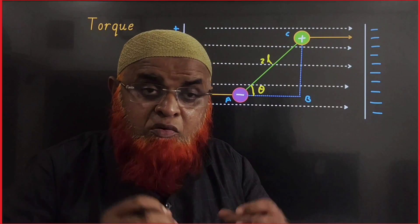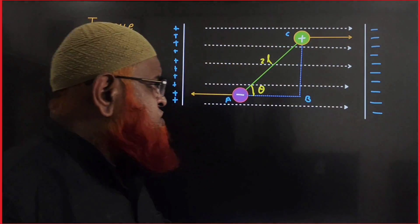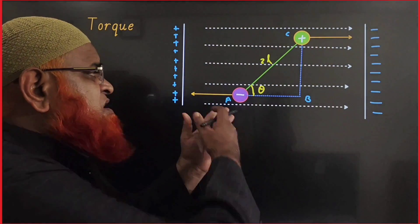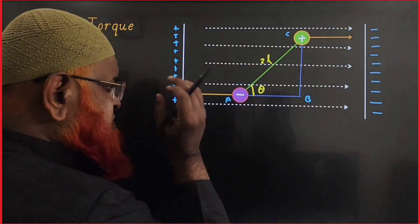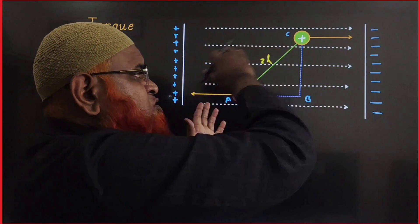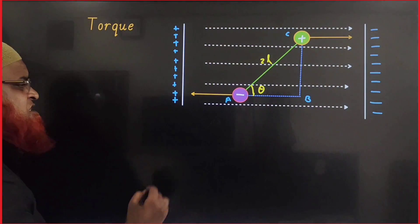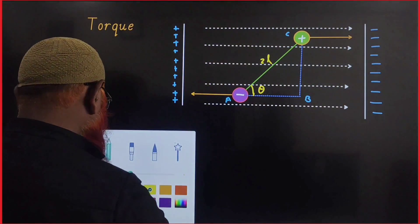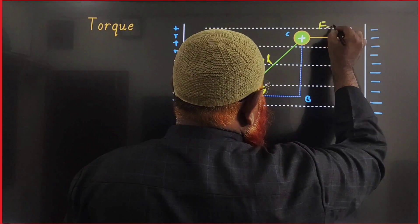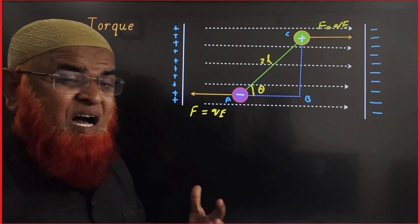Let me discuss torque acting on an electric dipole, which is very important and has many previous year questions. This is an electric dipole with positive and negative charges, placed in an electric field. The positive charge is attracted towards the negative side and the negative charge towards the positive side, by the force F = QE on each side.